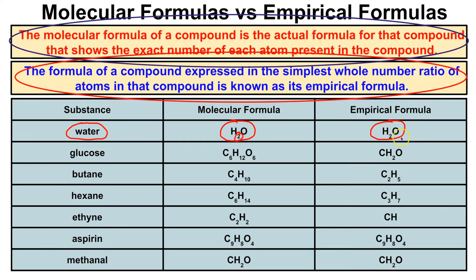If we take a look at glucose, its molecular formula is C6H12O6 — this is the actual formula for glucose. You can factor out a six from each one of these subscripts, and if we do, we end up with glucose's empirical formula of CH2O, or C1H2O1, but since we don't write subscripts of one, it's simply CH2O.